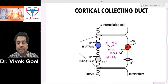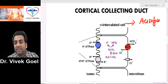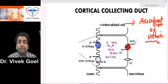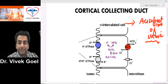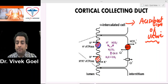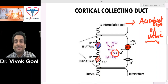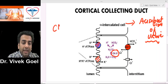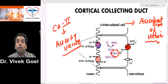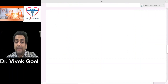Coming to the cortical collecting duct — specifically the alpha intercalated cell — this is the principal site of acidification of urine. Urine is mainly acidified in the alpha intercalated cell of the cortical collecting duct because there are two proton-secreting channels on the luminal aspect: the H+ ATPase that secretes the proton, and the H+/K+ antiport that secretes the proton in exchange for potassium. Both these protons are generated with the help of carbonic anhydrase 2 inside the cell. So carbonic anhydrase 2 plays a key physiological role in both bicarbonate reabsorption and urinary acidification.